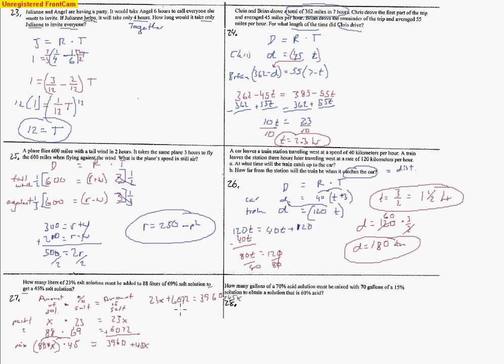We'll go ahead and move some terms around. You'll notice you end up maybe subtracting that 23x from both sides, subtract that 3960. This is what I end up with: 2112 equals 22x. When you do the division, x equals 96. 96 liters is what we end up getting there.